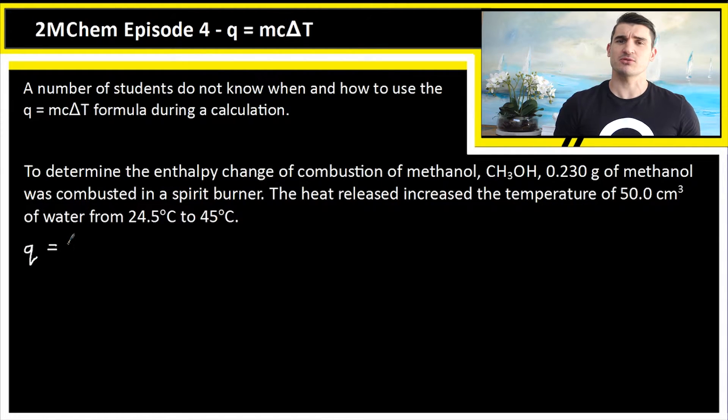So we use Q equals MC delta T to figure out the energy released while we burnt this methanol. Our mass is the mass of the water. In this case we have 50 centimeters cubed of water. Now 1 centimeter cubed of water weighs 1 gram, so we assume that we have 50 grams of water.